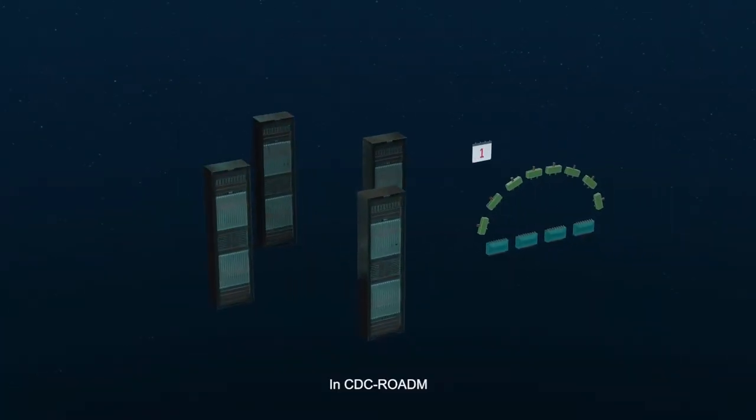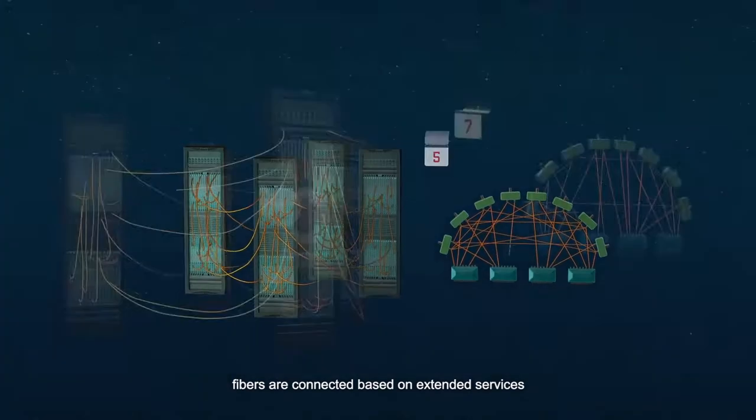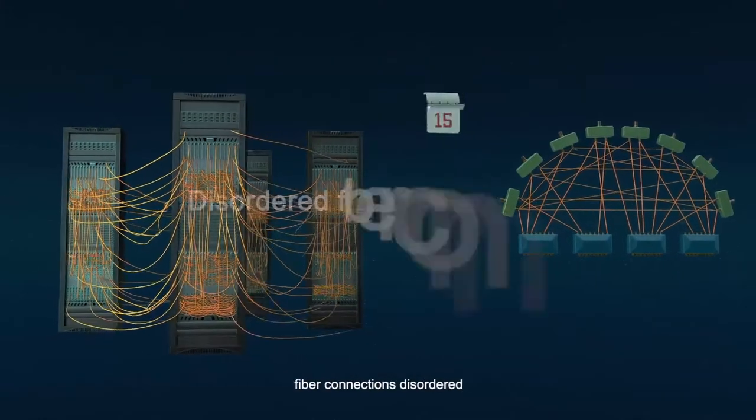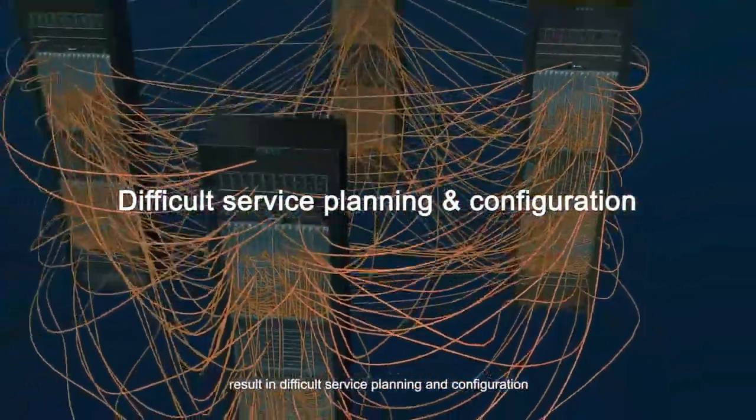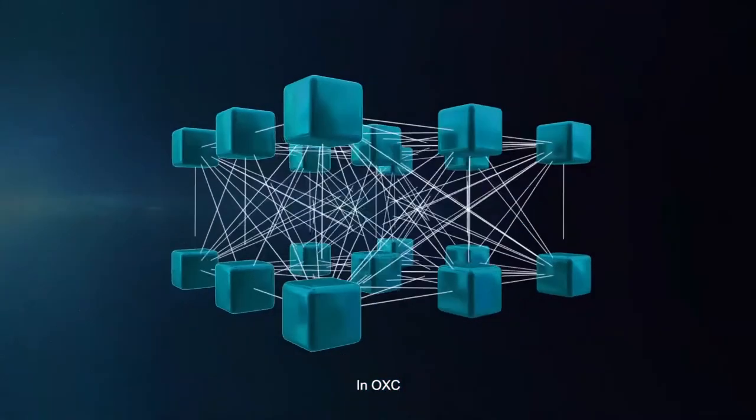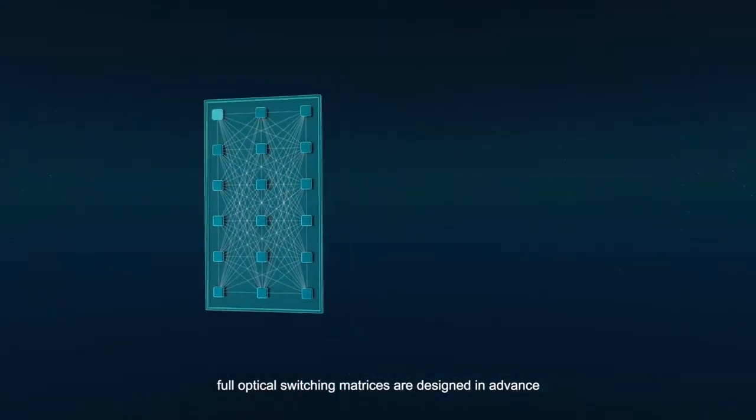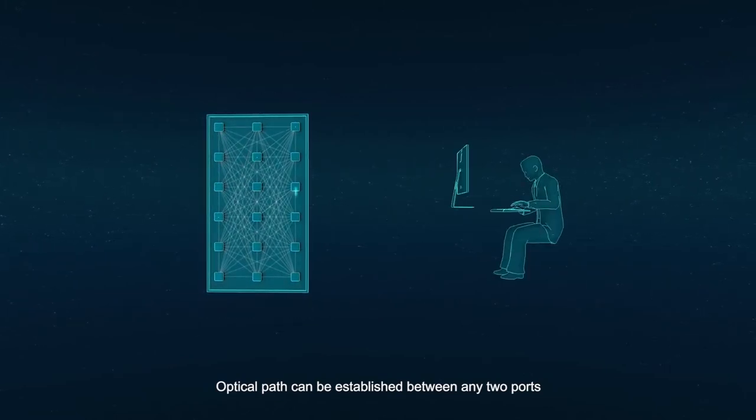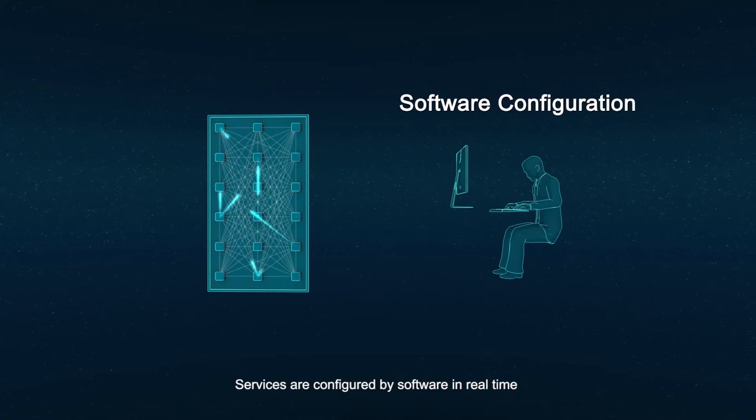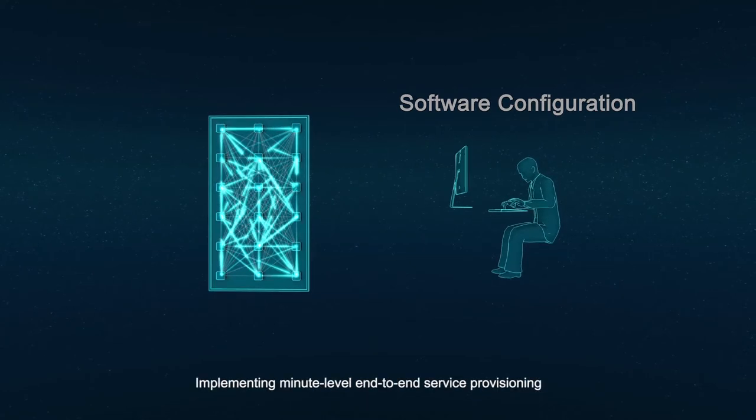In CDC ROADM, fibers are connected based on extended services. Without prior planning, fiber connections disordered, result in difficult service planning and configuration. In OXC, full optical switching matrices are designed in advance. Optical path can be established between any two ports. Services are configured by software in real time, implementing minute-level end-to-end service provisioning.